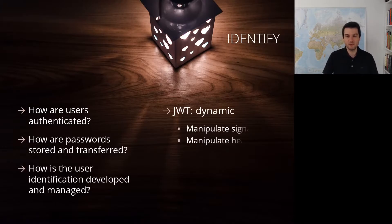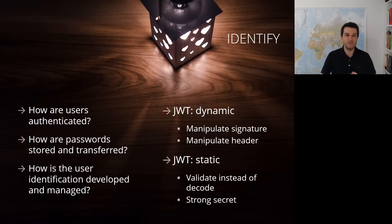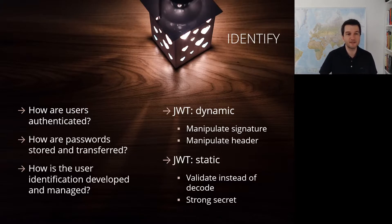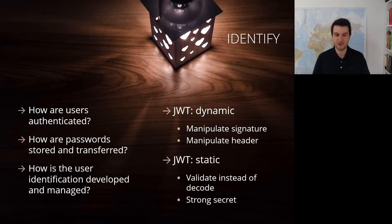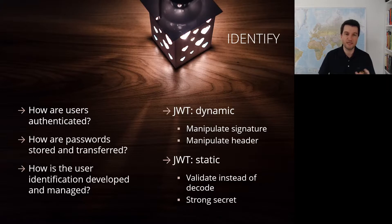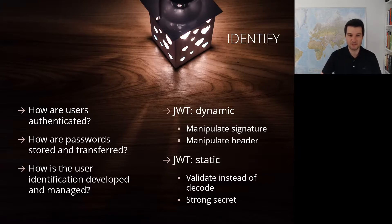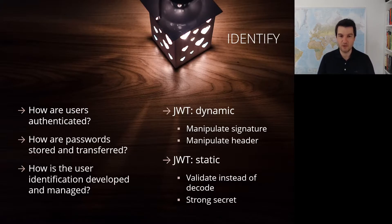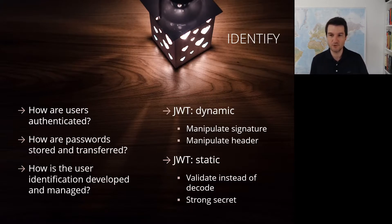To identify these issues, take a bird's-eye view of authentication: how are users authenticated, how are passwords stored and transferred, how is user identification managed, and are there strong guarantees about identity? For JWT specifically, do dynamic tests by manipulating parts of the token — the signature or header — or perform static analysis. In your code, always hard-code the algorithm used, validate the JWT at consumption time rather than just decoding it, and use a strong secret.